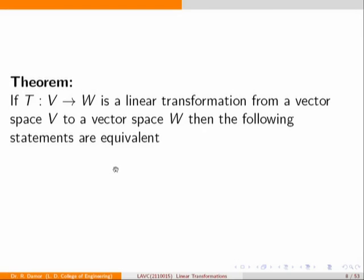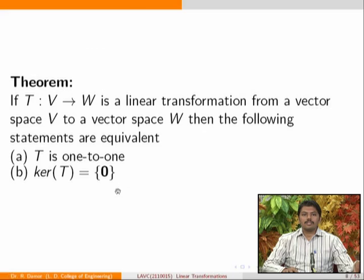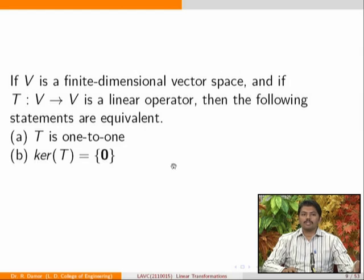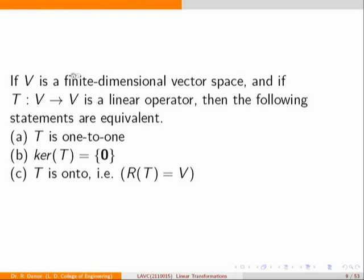Some important results: T is one-to-one if and only if kernel(T) = {0}. Furthermore, if V is a finite-dimensional space and T from V to V is a linear operator, then the three statements — T is one-to-one, kernel(T) = {0}, and T is onto with range(T) = V — are all equivalent.